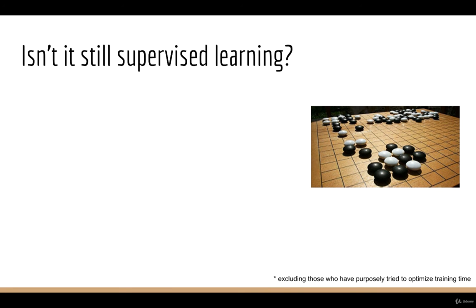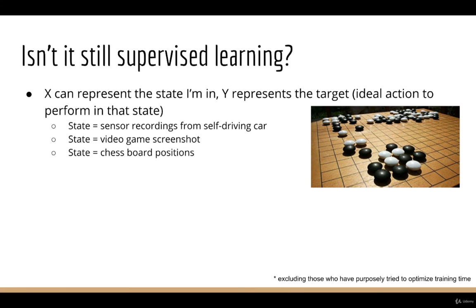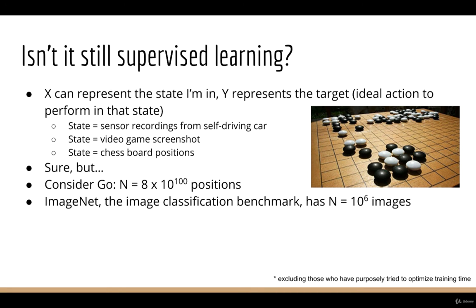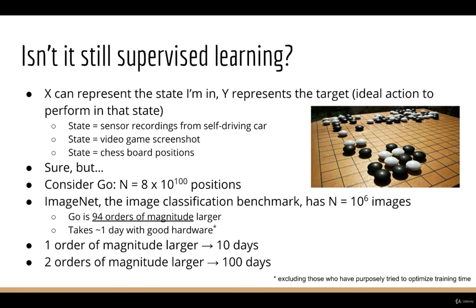Some might think a supervised algorithm should still be able to solve reinforcement learning tasks — if X represents the state, then Y, the target, should just be the correct action to take for that state, so whether driving a car, playing a video game, or playing chess, you always do the right thing. Here's the problem: a game like Go has 8×10^100 possible board positions, which is an infeasible amount of input data. For comparison, ImageNet, our largest image benchmark, has about 10^6 samples — so the number of samples for Go would be 94 orders of magnitude larger than ImageNet, which can already take about one day to train with state-of-the-art hardware. One order of magnitude larger would take 10 days, two orders would take 100 days — now imagine 94 orders of magnitude larger.